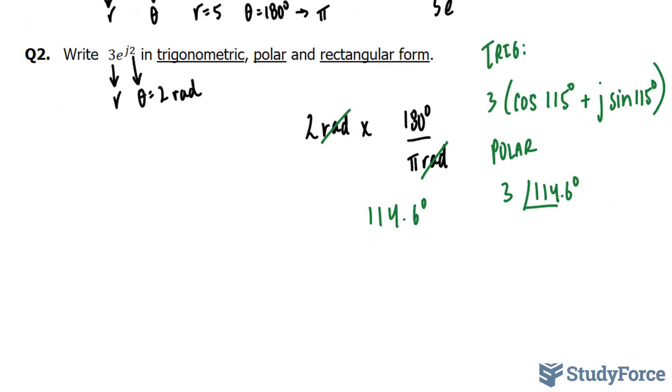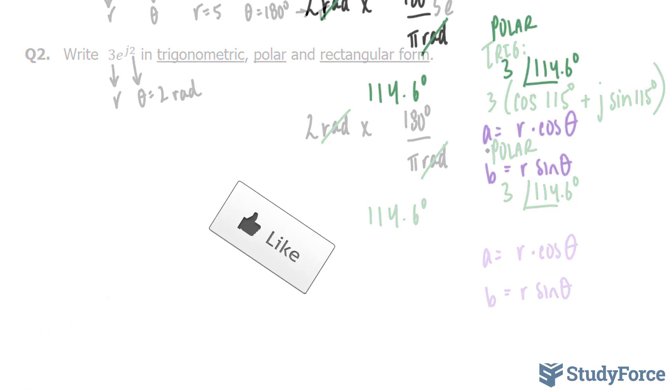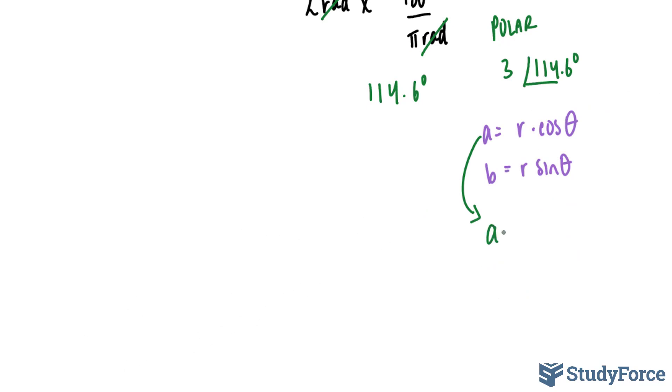And in rectangular form, we need to use the following two formulas, where a is equal to r times cosine theta, and b is equal to r times sine theta. This one becomes 3 times cosine of 115. B is 3 times sine of 115.